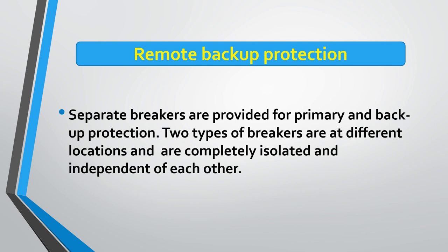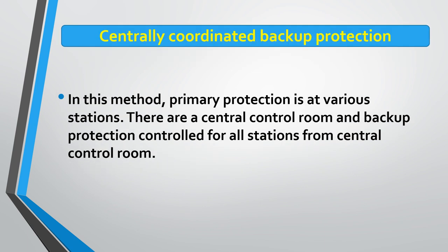In remote backup protection, separate breakers are provided for primary and backup protection. The two types of breakers are at different locations and are completely isolated and independent of each other — if one element fails, the second comes into picture. In addition, there is centrally coordinated backup protection, where primary protection is at various stations and backup protection for all stations is controlled from a central control room.